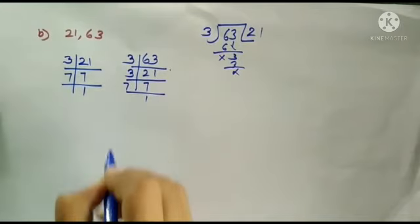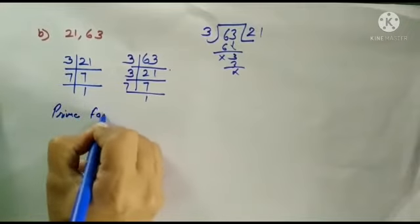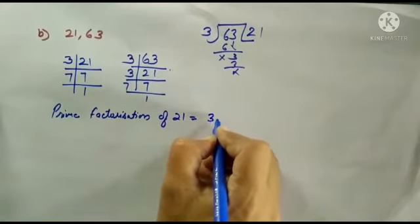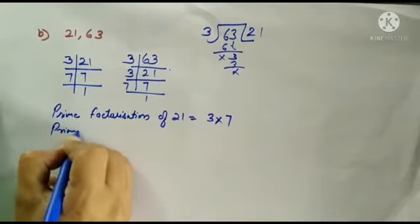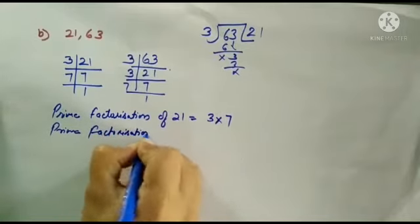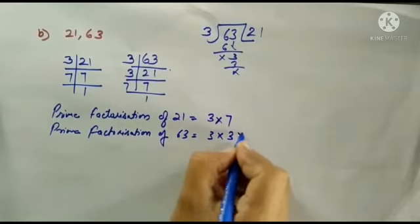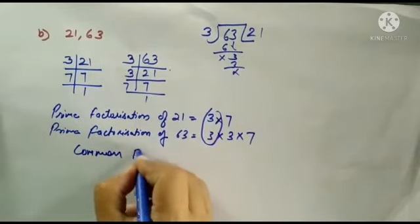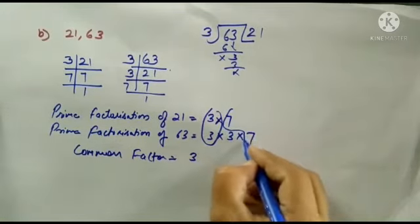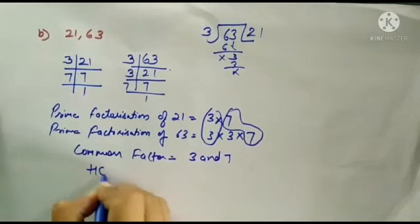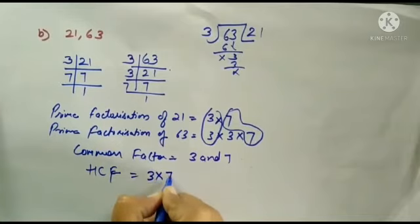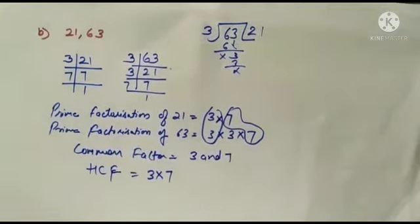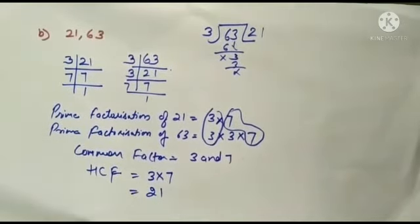So we will take prime factorization. Prime factorization of 21 is 3 multiplied by 7. Prime factorization of 63 is 3 multiplied by 3 multiplied by 7. Common factors are 3 and 7. So my answer is 21.